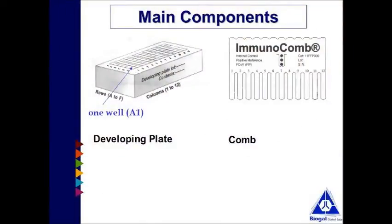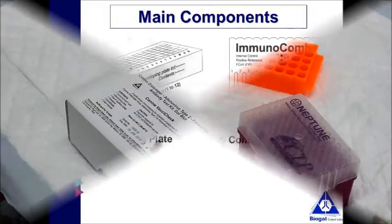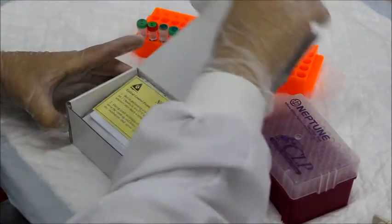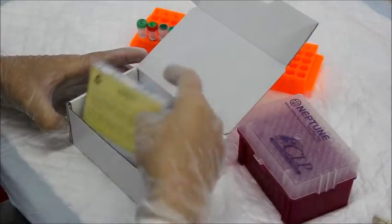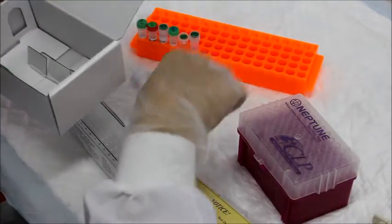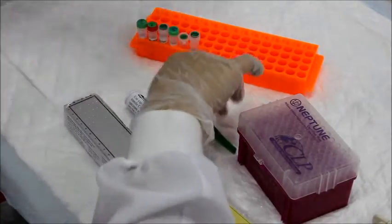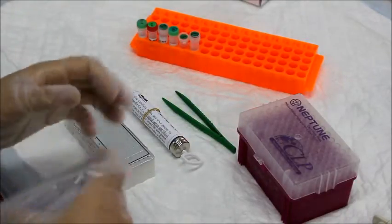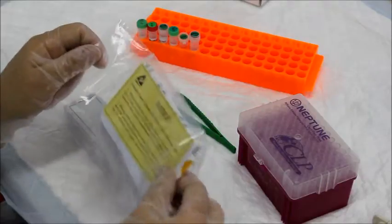The components for the kits are as follows: ImmunoComb comb wrapped in an aluminum foil, developing plate, disposable tweezers, calibrated comb scale and a unit of capillary tubes and one piston, and instruction manual.